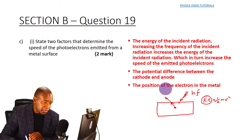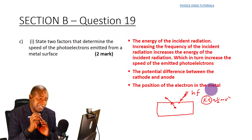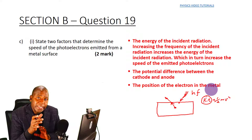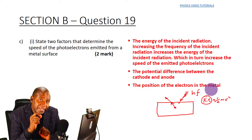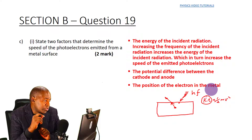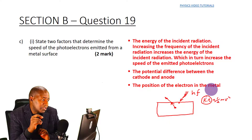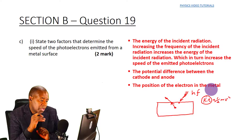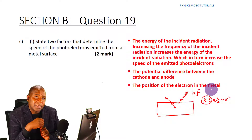That is why the position of the electron in the metal also determines how much kinetic energy — and hence speed — the electron will have when it leaves the metal surface. This is a third factor affecting the speed of the photoelectron emitted.